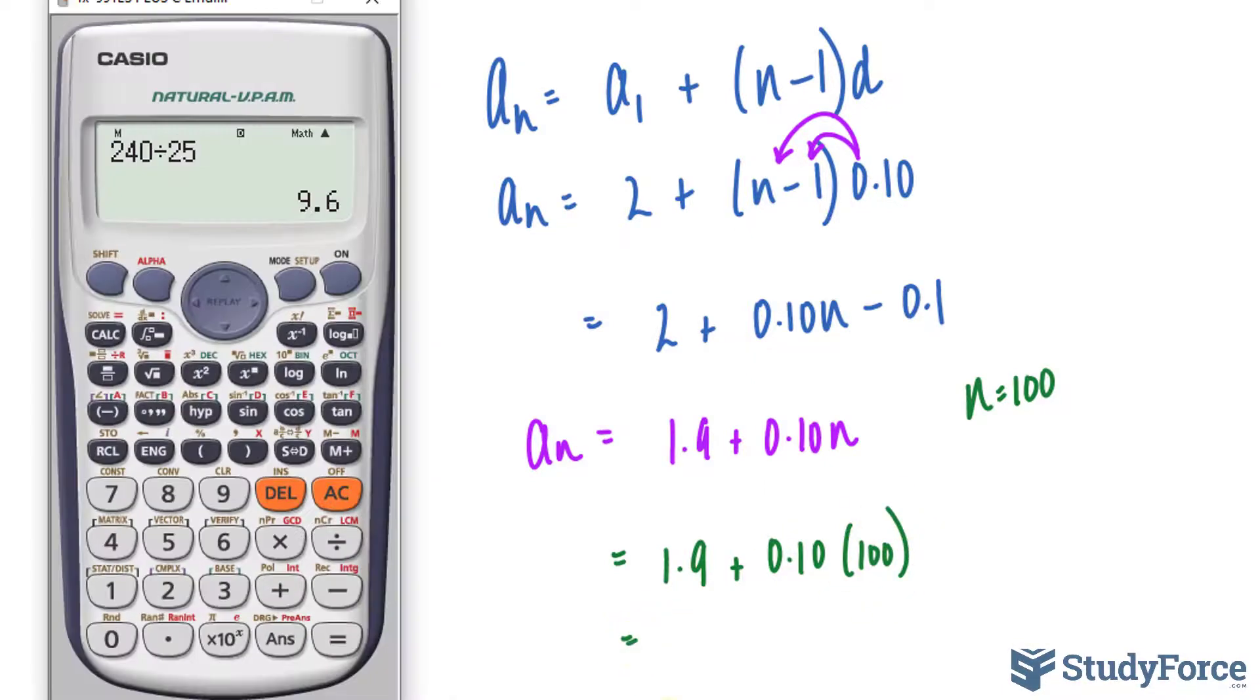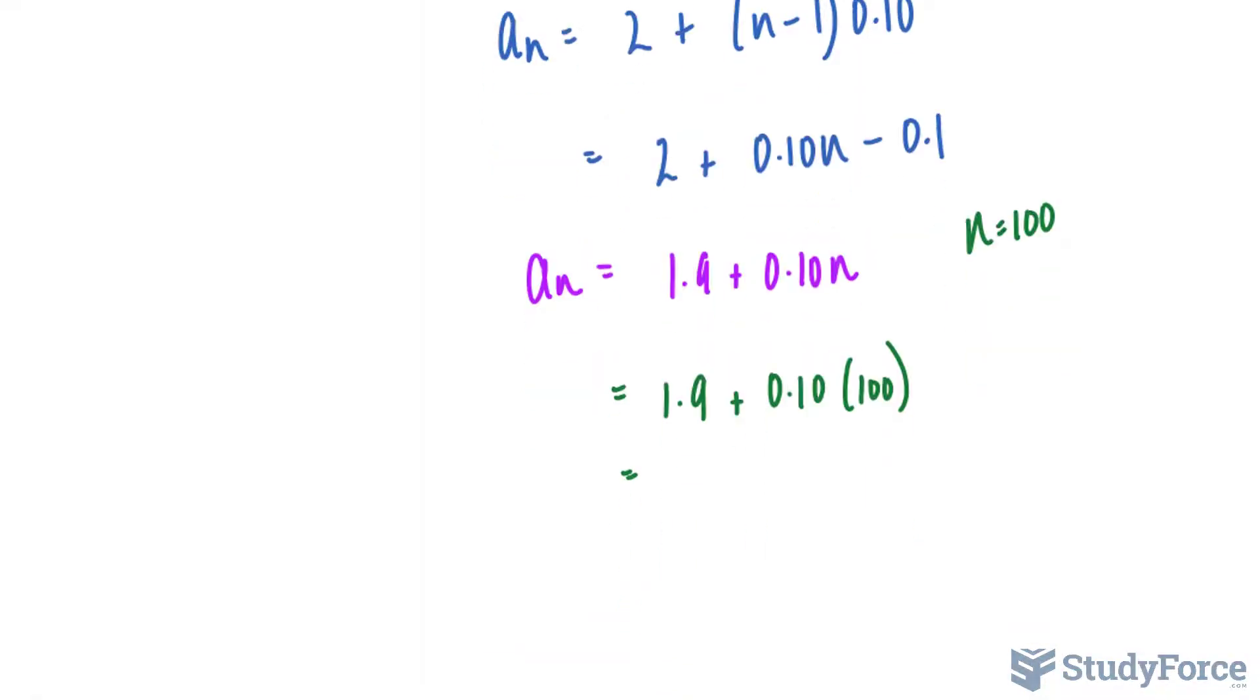Let's use our calculator. 1.9 plus 0.10 times 100 gives us $11.90. So if he were to sell 100 subscriptions, on that 100th subscription, he would have made $11.90 just for that 100th that he sold.